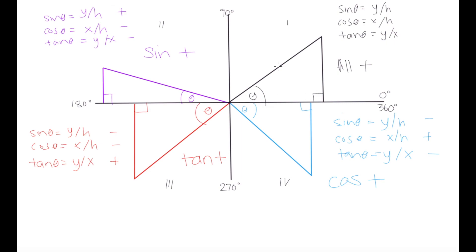So regardless of whatever angle you get: in quadrant 1 all trig functions are positive; in quadrant 2, which covers 90 to 180 degrees, sine is positive while cosine and tangent are negative; in quadrant 3, from 180 to 270 degrees, only tangent is positive and cosine and sine are negative; and in quadrant 4, from 270 to 360 degrees, only cosine is positive and sine and tangent are negative.